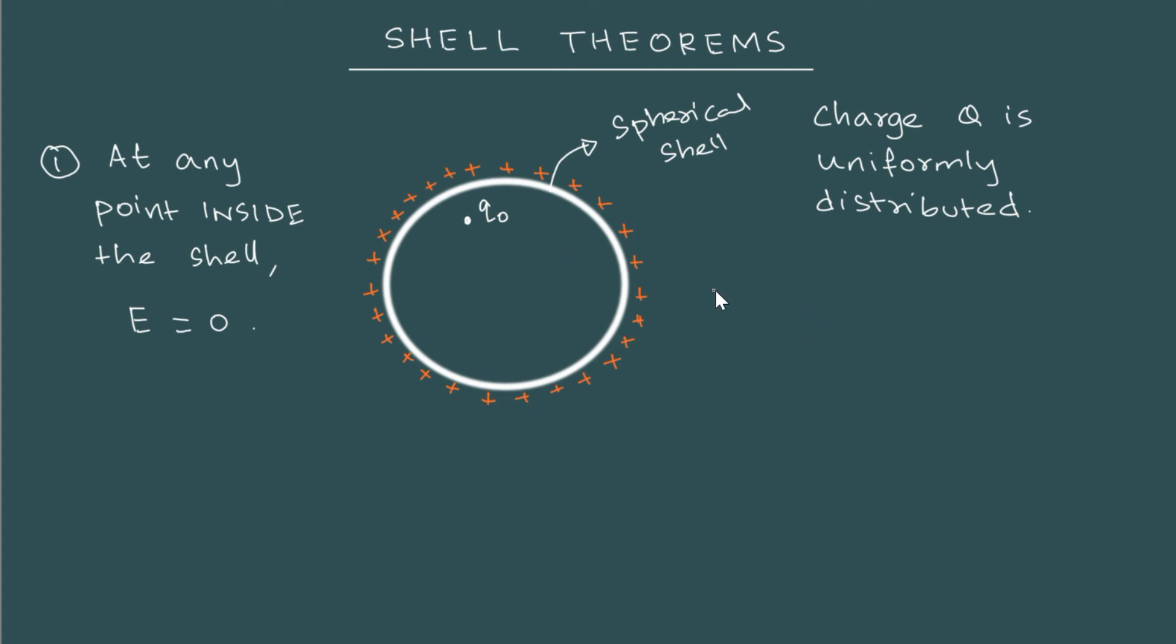Shell theorem number two: at any point outside the shell, suppose I take a point P here. If I'm trying to calculate the electric field at this point, and the distance from the center of the shell is r, then the electric field is simply 1 by 4π epsilon 0 times Q by r squared.